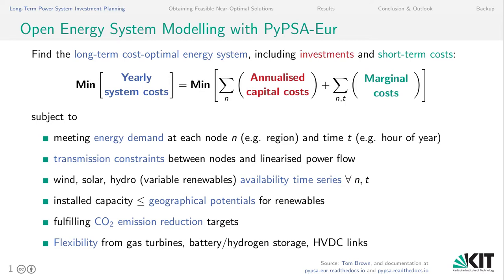The overarching objective is to minimize the yearly system costs, which comprises both annualized capital costs as well as remaining operational costs, given a particular emission reduction target as a constraint. We moreover demand that energy demand is met at each node in each point in time and we introduce transmission constraints between the nodes as well as multi-period linearized optimal power flow. This set of constraints moreover includes limits on the availability and potentials of renewables, which are derived from re-analysis weather data and land-use databases.